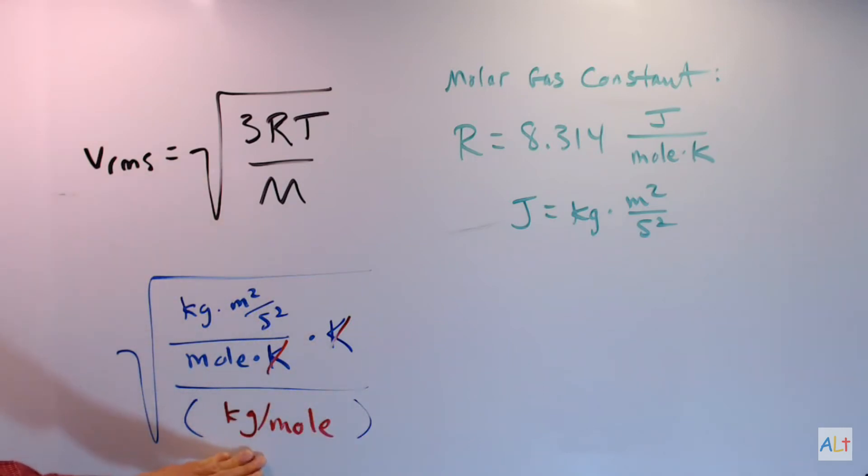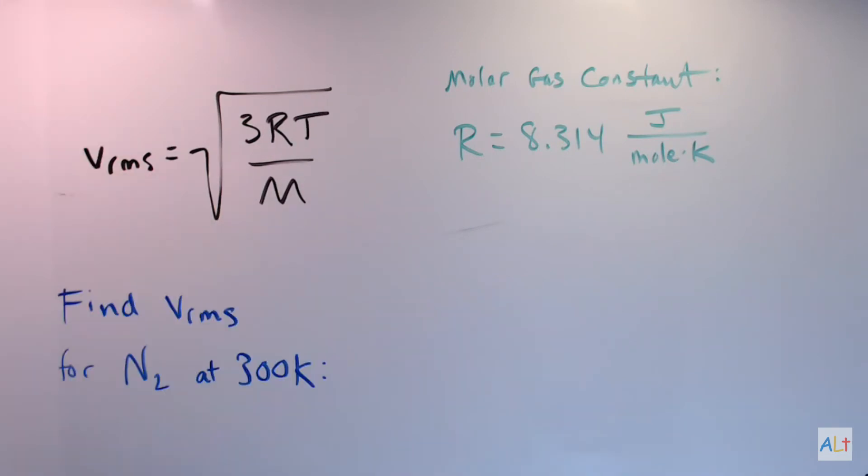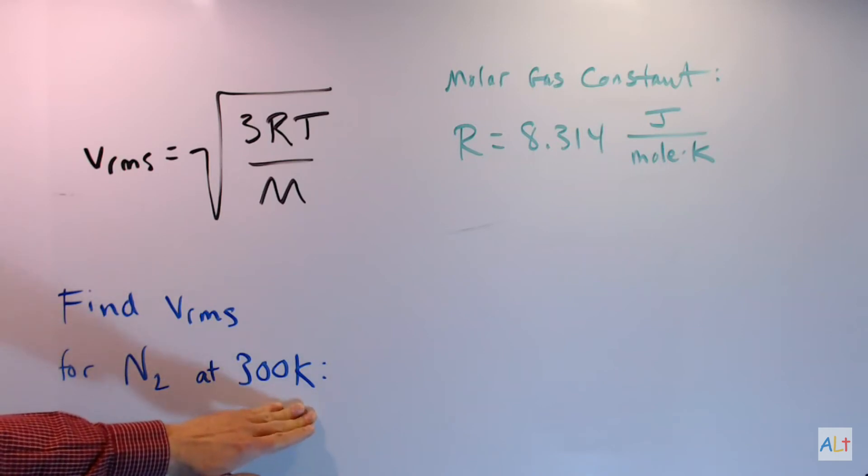So there you have it, kilograms per mole. Let's do an example problem. So here's a simple problem. Find the root mean squared velocity for nitrogen gas at a temperature of 300 kelvins.